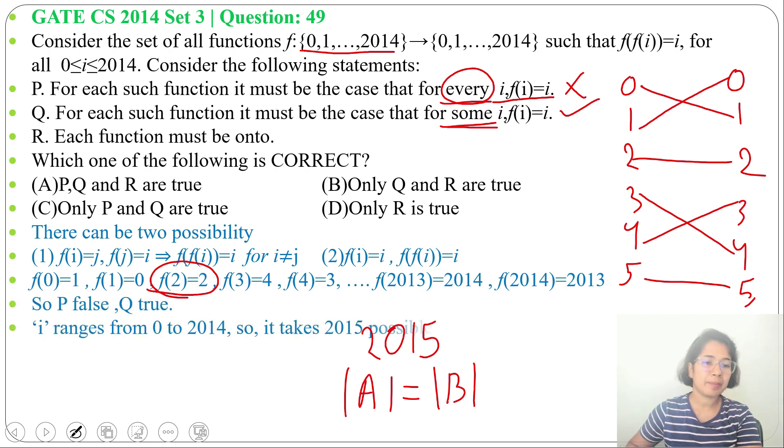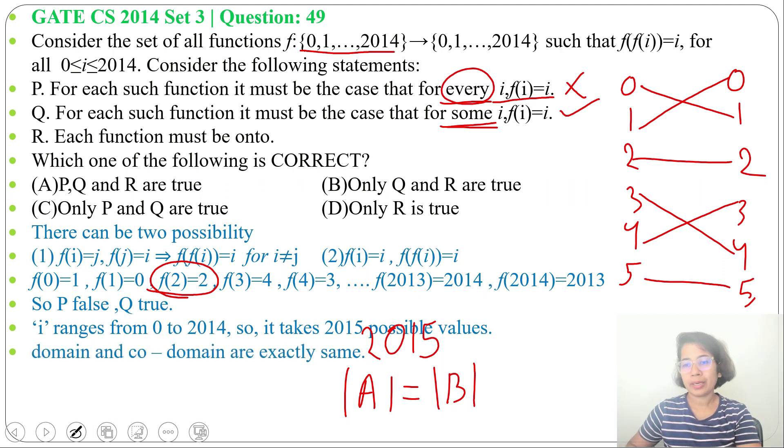That's why statement R is also true. Each function must be onto. So it's both one-to-one and onto, or you can say it's a one-to-one correspondence. So we found P is false, Q is true for some i, f(i) = i, and each function must be onto.